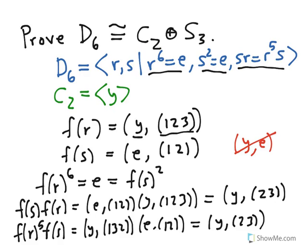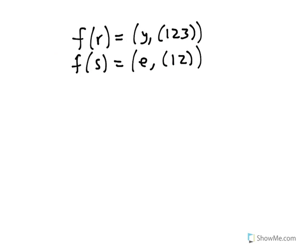And so F is going to extend, by the universal property of a presentation, to a homomorphism from D₆ to C₂ plus S₃. Now, to show that we actually have an isomorphism, we need to show that we have a bijection. And the easiest way to do this, first, check the order. We know that the order of D₆ is 12. And the order of C₂ plus S₃ is just 2 times 6, which is also 12. So they have the same order. So if we can show either 1 to 1 or onto, we'll be done.